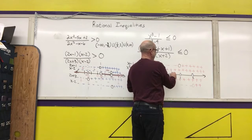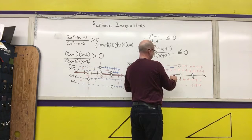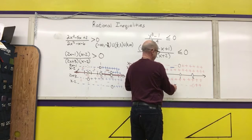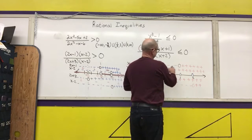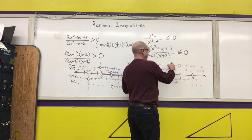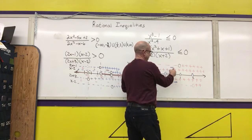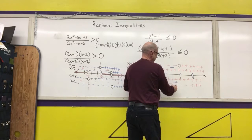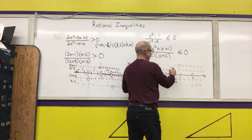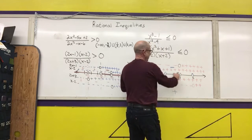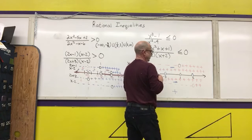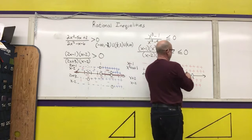My next interval is between negative two and one. Negative times positive is negative; positive times negative is negative; negative over a negative is a positive. So nothing in this region gets shaded either.